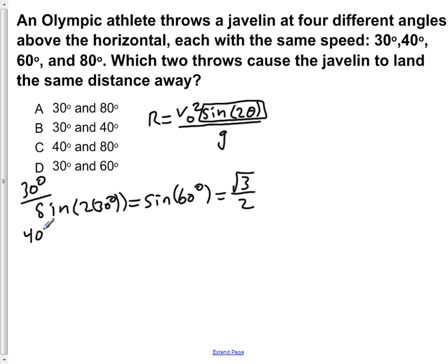Then we do 40 degrees. So the sine of 2 times 40 degrees is the same as the sine of 80 degrees, which is equal to 0.984.